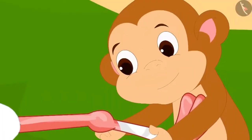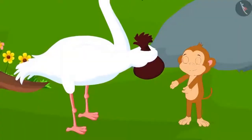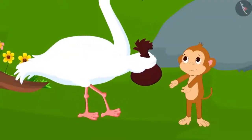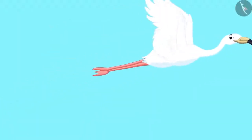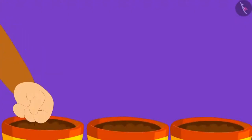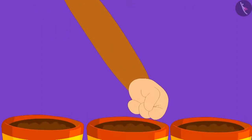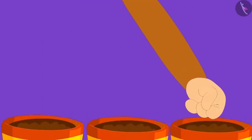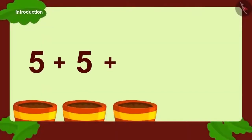Then he took care of the bird just like Golu, and the bird recovered. Before leaving, the bird gave some seeds to Babban too. Babban planted five seeds each in three pots. Can you tell how many seeds did Babban plant in total? Five plus five, plus five.